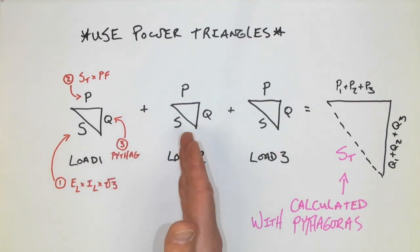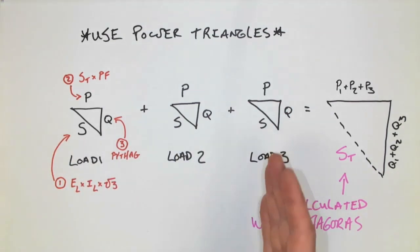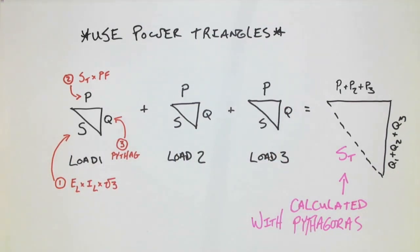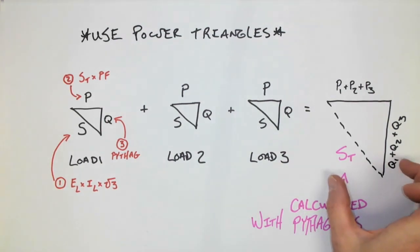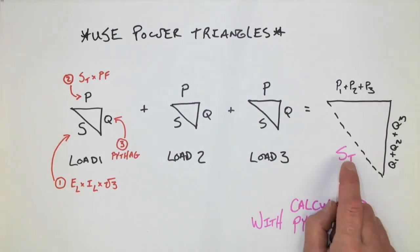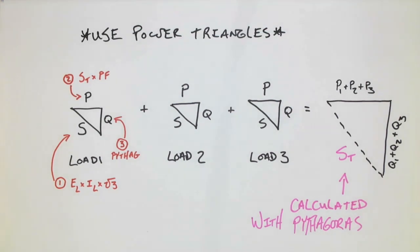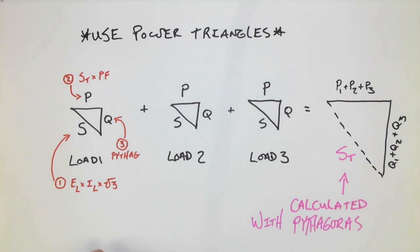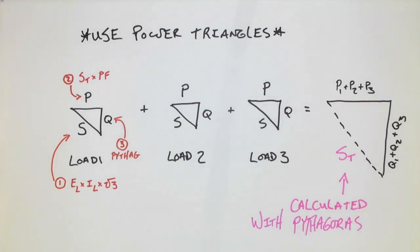After I've calculated the horizontal and vertical component of each load, we then move on to the total. From here, I can then calculate the VA total for the entire system, and I could also work out the total line current. Because remember, S total is equal to E line times I line times root three. So let's take a look at our first example.